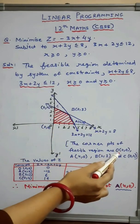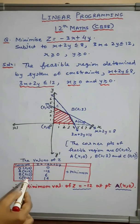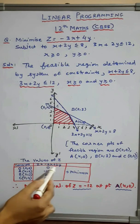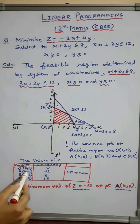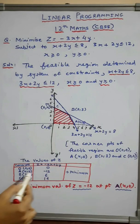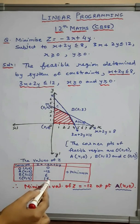The corner points of the feasible region are O, A, B, and C. Putting these values of the corners in Z: at O(0,0), Z = 0; at A(4,0), we will get -12; at B, Z = 6; at C(0,4), we will get 16.